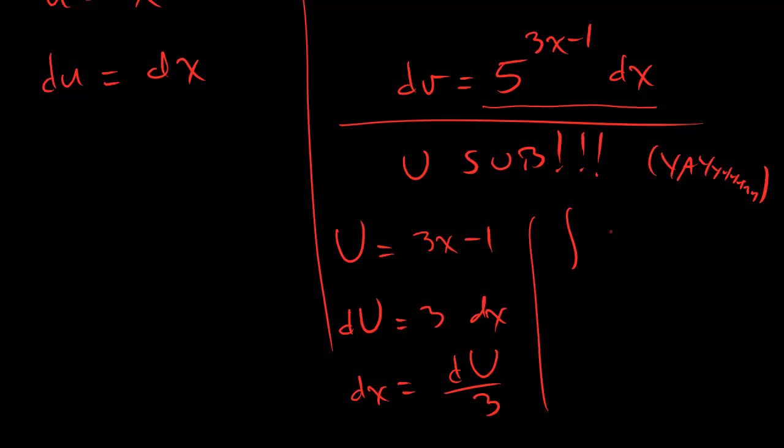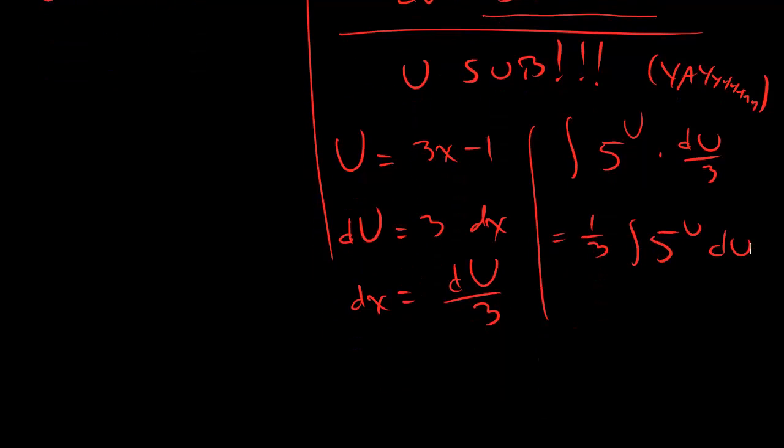It looks like the integral of 5 to the u, dx becomes du over 3. That's the same thing as 1 third integral 5 to the u du. And if you remember your rules correctly, that's 1 third times 1 over natural log of 5 times 5 to the u. And then, of course, if you're going to put the finishing touch on it,